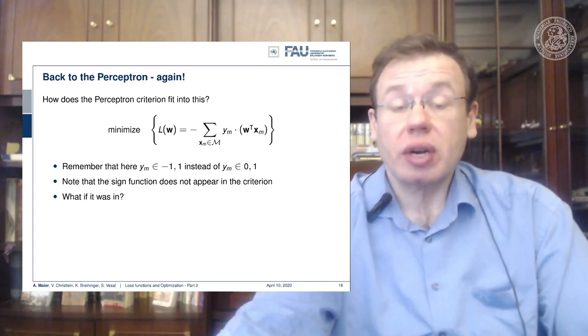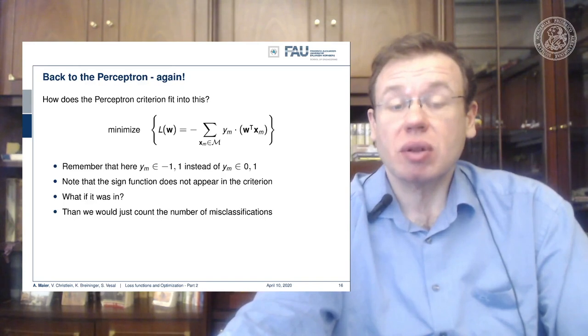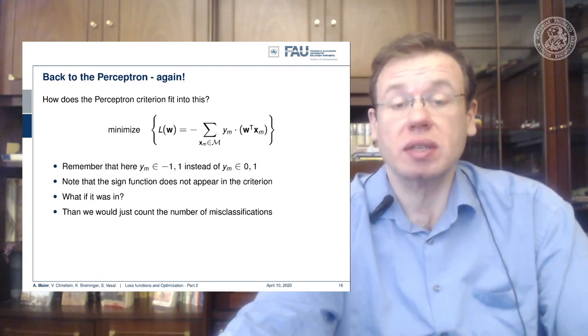Now if it were in, we would run into problems because this would only count the number of misclassifications and we would not differentiate whether it's far away from the decision boundary or close to the decision boundary.